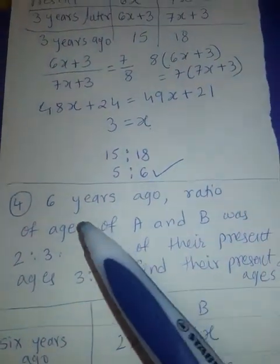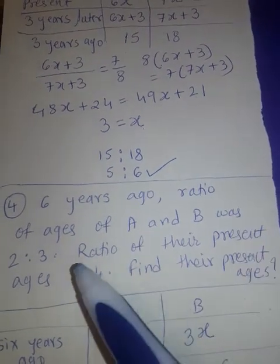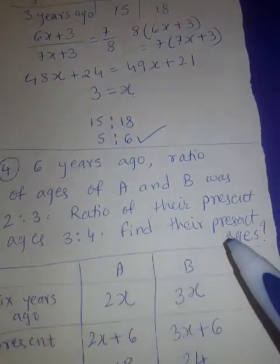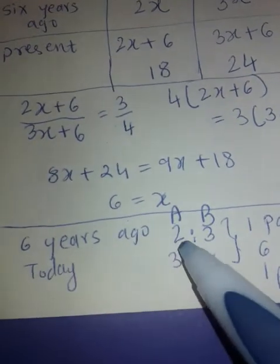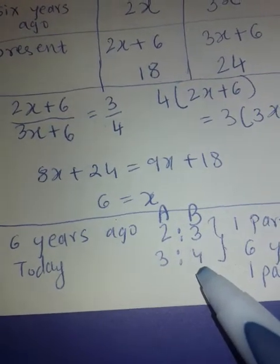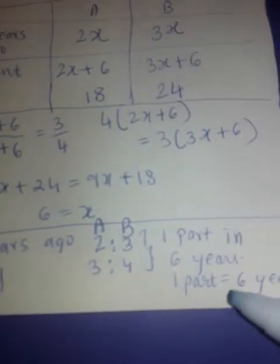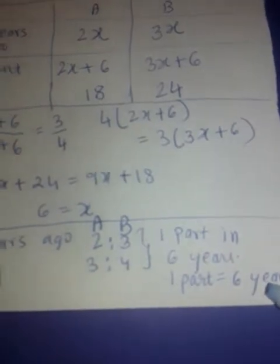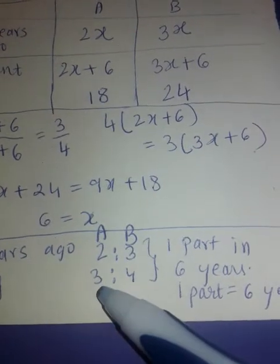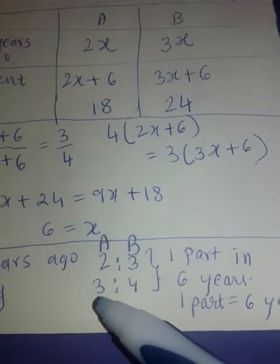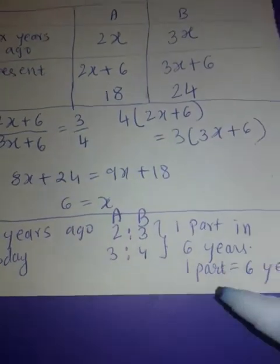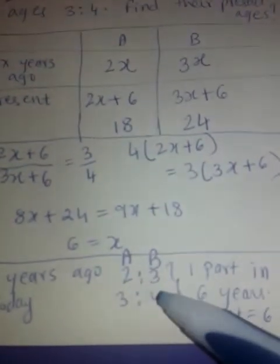Let's see one more shortcut example from Part 1: 6 years ago ratio of ages of A and B was 2 to 3; ratio of their present ages is 3 to 4. Find the present ages. 6 years ago it was 2 to 3, today it is 3 to 4 — in 6 years it moved by 1 part, so 1 part equals 6 years. The question asks present ages: A is 3 parts so 3 times 6 is 18, and B is 4 parts so 4 times 6 is 24. Answer is 18 and 24.